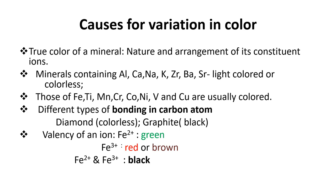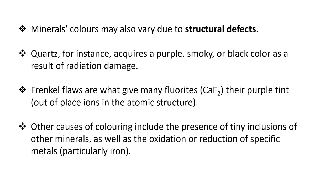Color variation can also be due to the valency of iron. If a mineral contains Fe²⁺ it is green; if it contains Fe³⁺ it may be red or brown; if it contains both Fe²⁺ and Fe³⁺ it will appear black. Minerals may also vary in color due to structural defects — for example, quartz acquires a purple, black, or smoky color as a result of radiation damage.